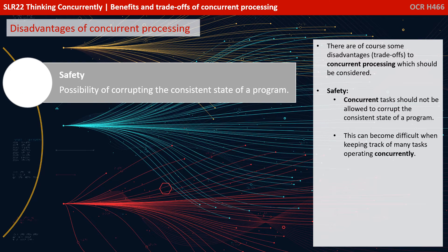There are of course some disadvantages or trade-offs to concurrent processing which should also be considered. The first is safety. Concurrent tasks should not be allowed to corrupt the consistent state of a program, and this can become quite difficult when keeping track of many tasks and processes operating concurrently.